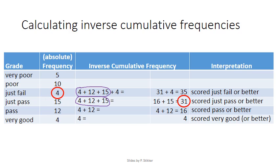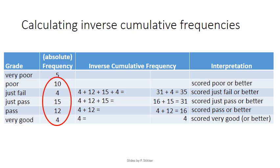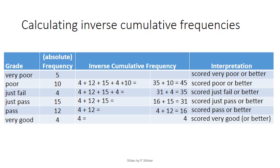I'll quickly go over the other ones. Scored poor or better is the sum of these, which equals this one plus 35. And the last one is, of course, everyone, so that's all of them added up together, which is 45 plus 5, a total of 50.